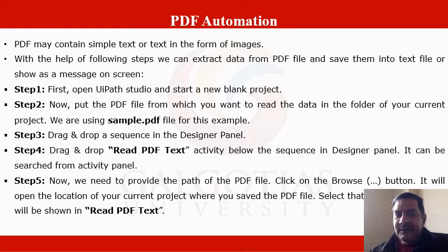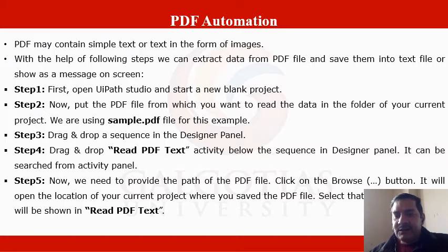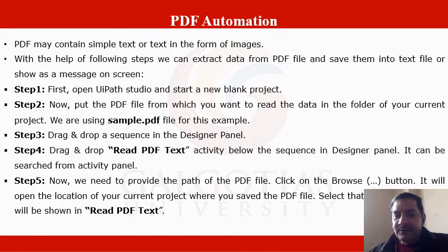After dragging and dropping the sequence into the designer panel, step 4 is to drag and drop the Read PDF Text activity. This activity retrieves and reads data from your PDF file. Drag and drop the Read PDF Text activity below the sequence in the designer panel - it can be searched from the activity panel, or within the designer panel using the plus symbol. Step 5: provide the path of the PDF file by clicking the browse button, which opens the location of your current project where you saved the PDF file.